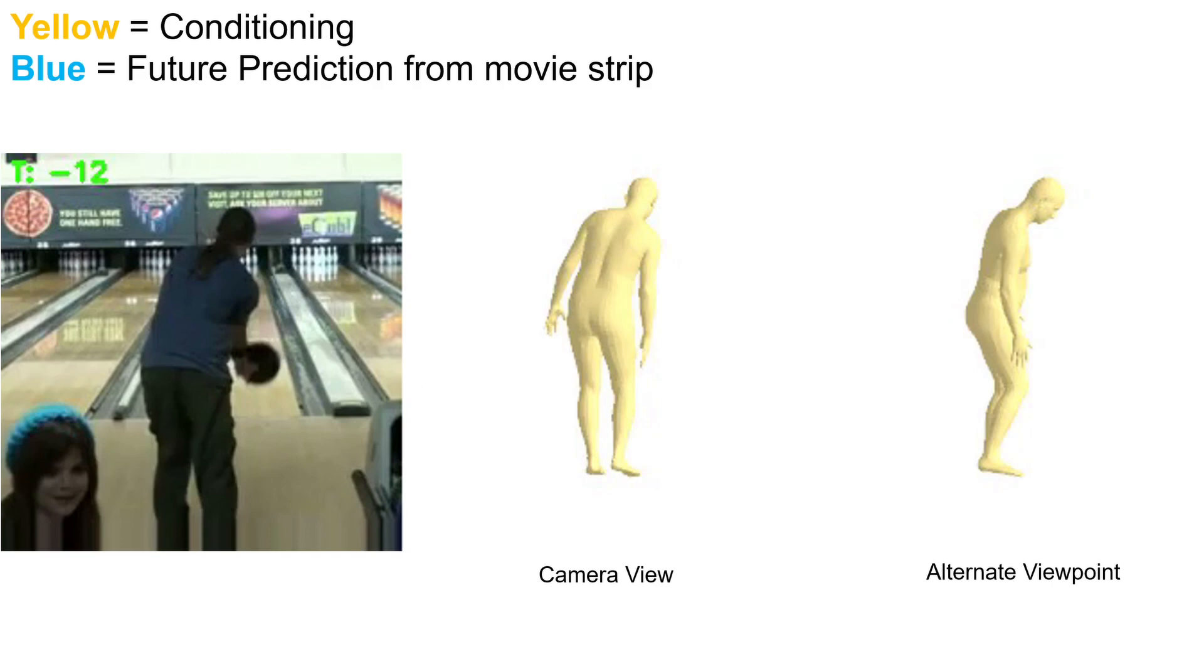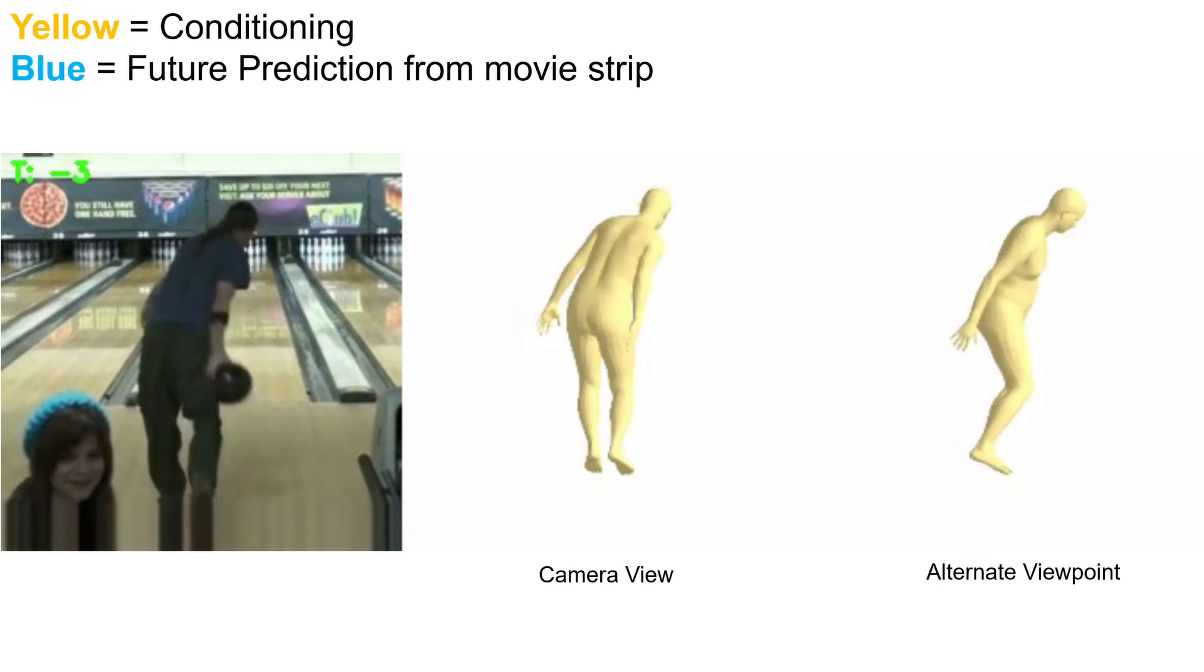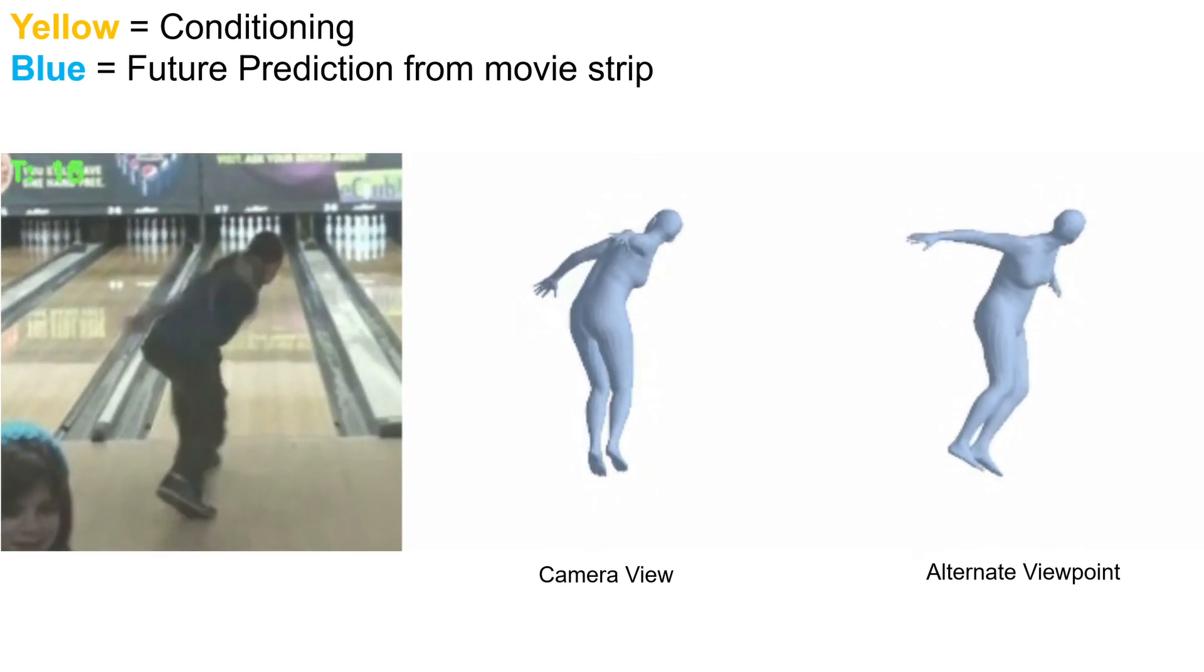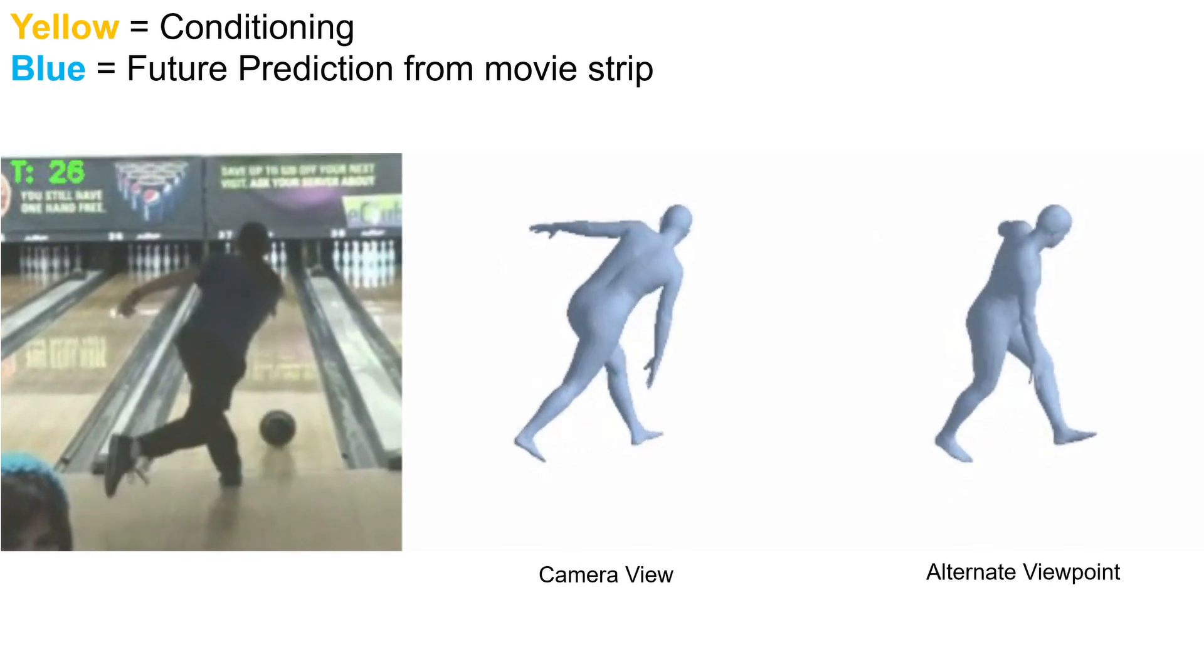Here we show some qualitative results. Our approach can predict the future 3D motion of actions such as bowling. The yellow mesh is read out directly from the ground truth movie strips. The blue mesh is the predicted output of our model.